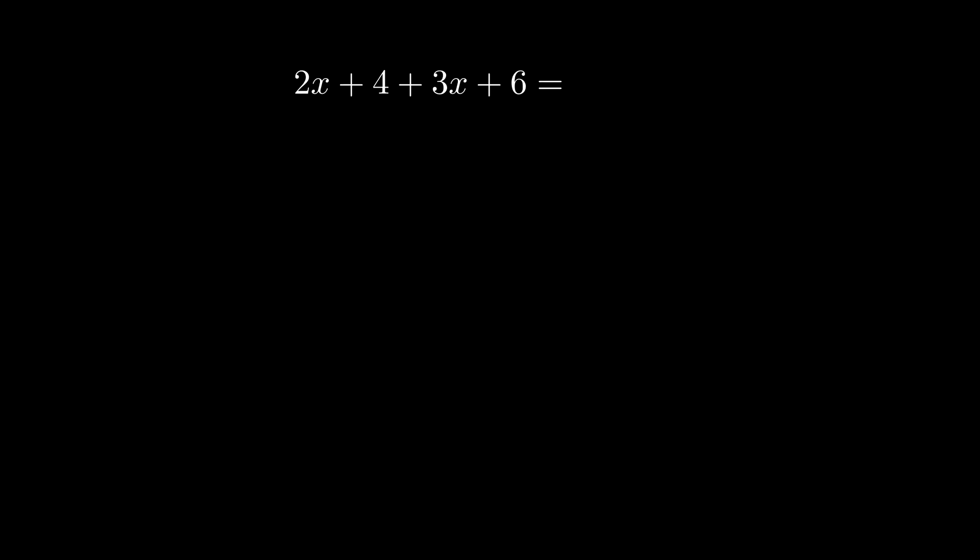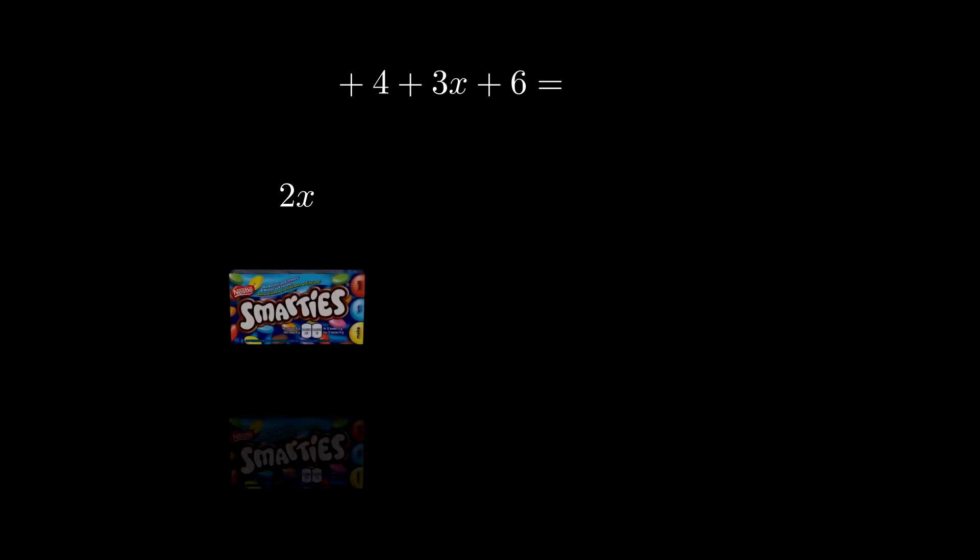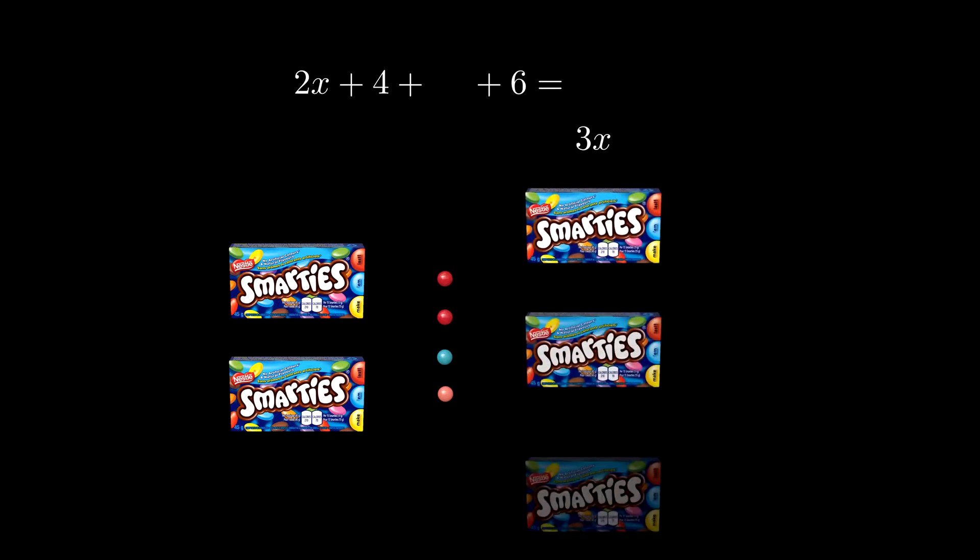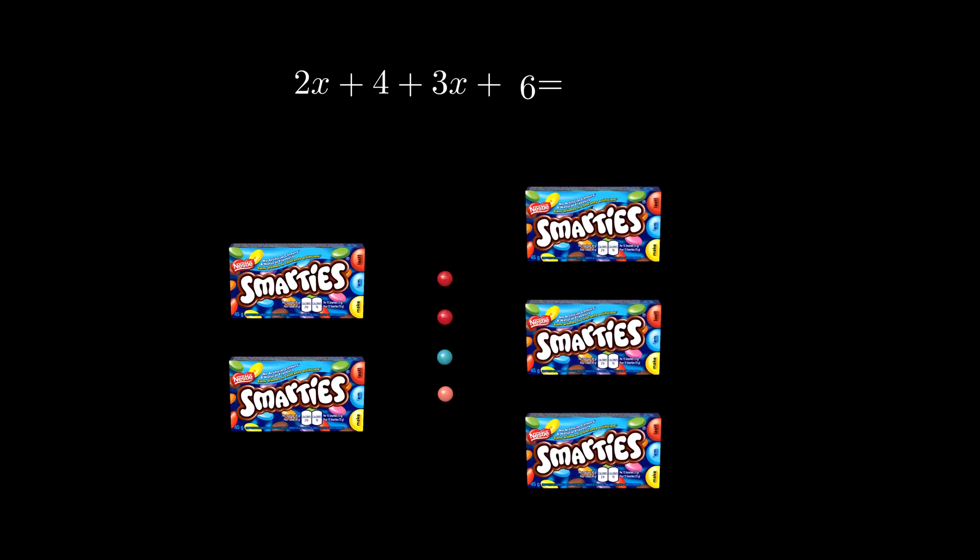So continuing on from last time, we would picture 2x as two boxes of smarties. Then the 4 would mean four extra single smarties on the side there. Then the 3x would mean three boxes of smarties. And finally, the 6 would mean six extra single smarties on the side there. So if you're ever confused with what to do when you're trying to simplify stuff, I would like you to imagine a picture like this.